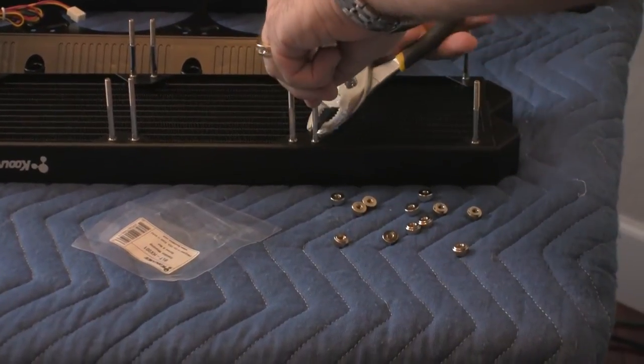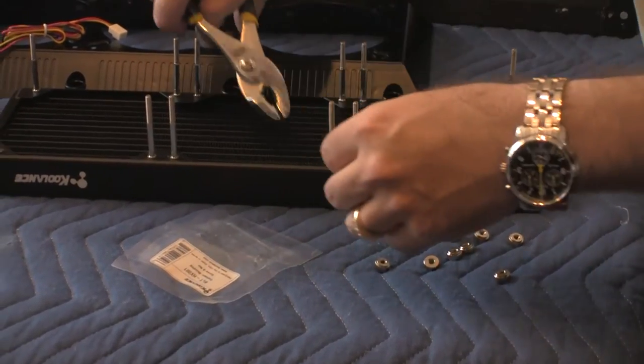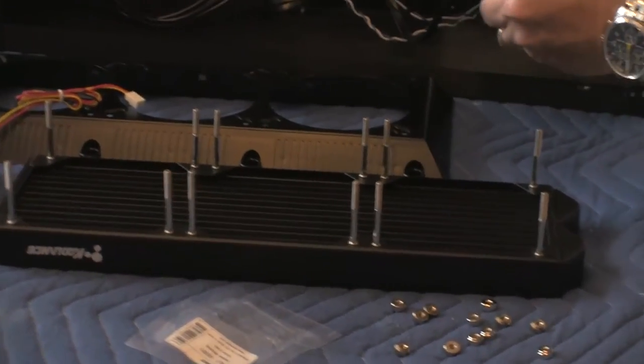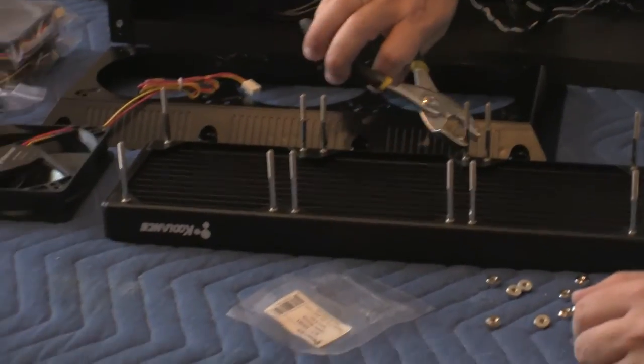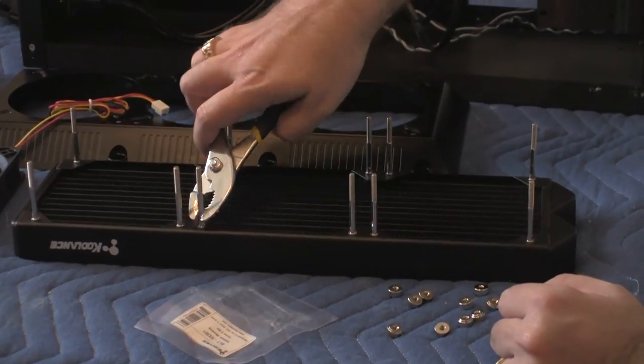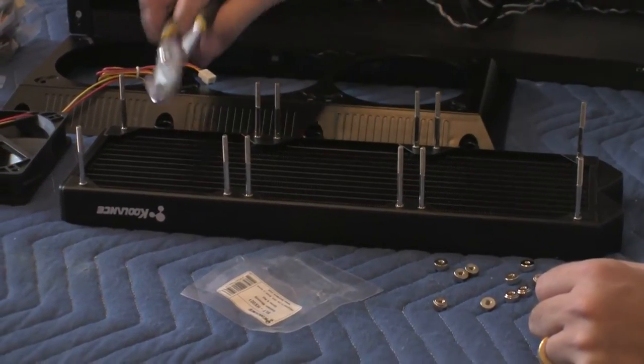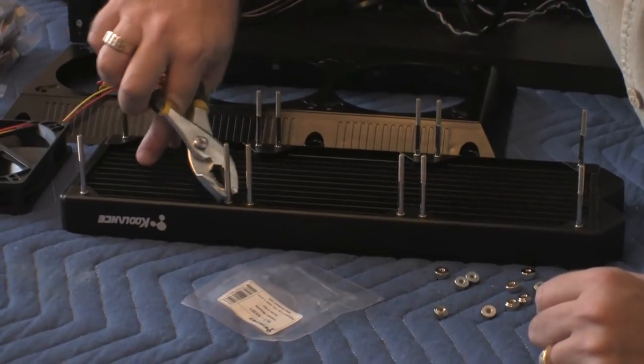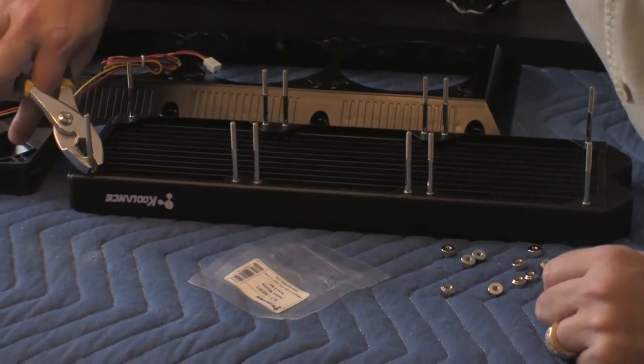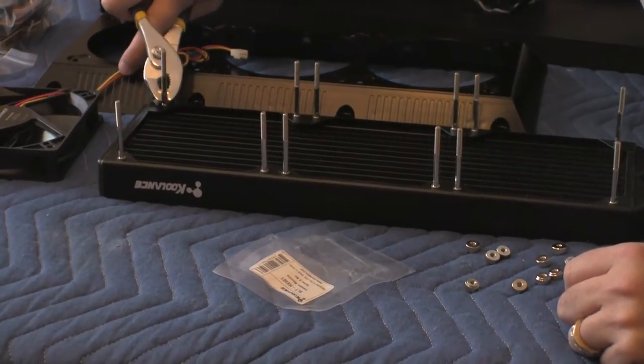I'm basically going to use the pliers to tighten all the connectors. They appear to be pretty tight already, but just to be safe. We don't want anything to be falling out while the machine is on. That would not be a good idea.